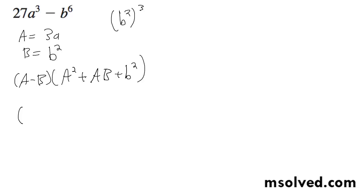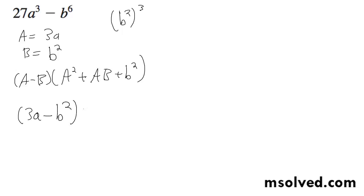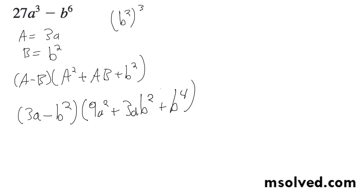So we get 3a minus b squared, times the quantity 9a squared plus 3ab squared plus b to the 4th. And that's it.